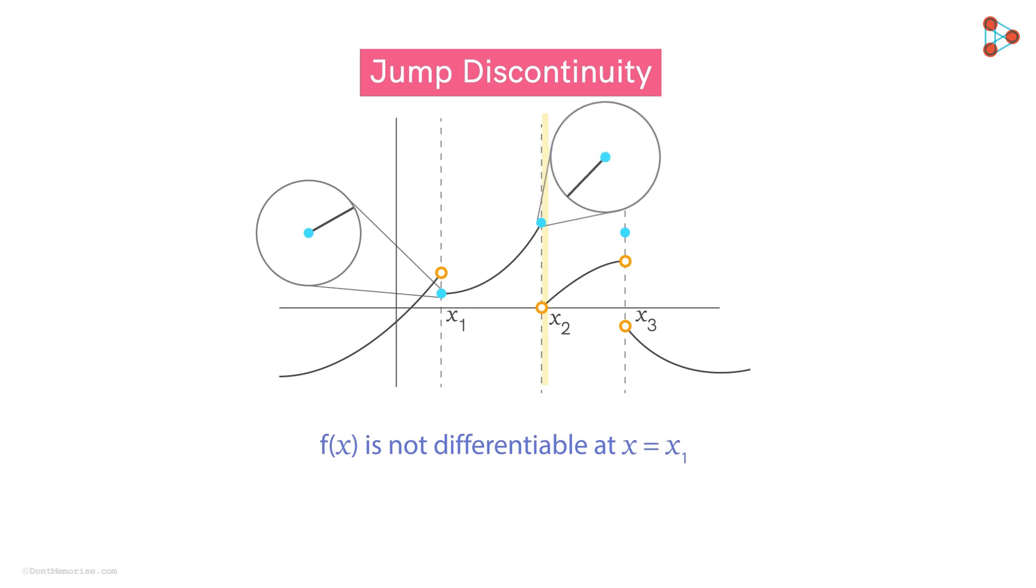At X2, again for the same very reason, the function is not differentiable. At X3, we cannot approximate in any neighbourhood, we can't define a tangent at an isolated point. So, in general, at points of discontinuities of this type, the function is not differentiable.